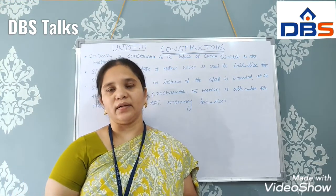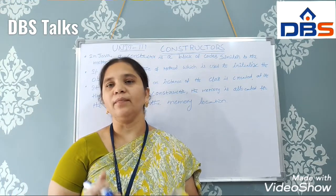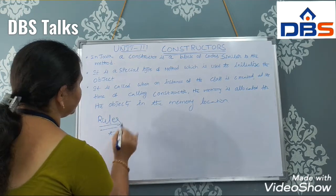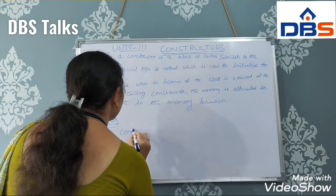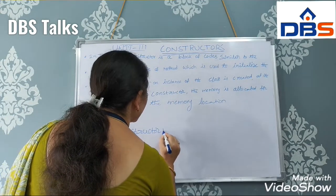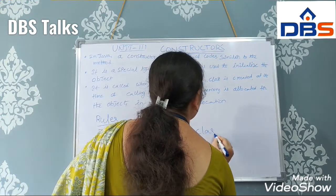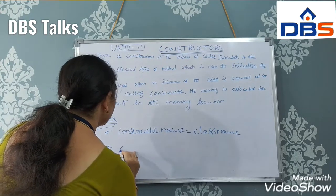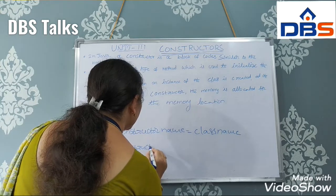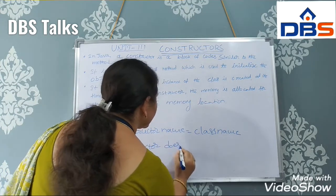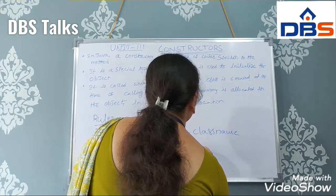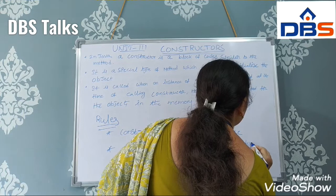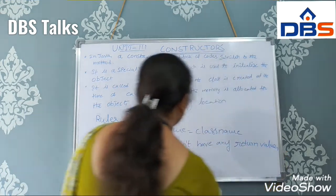When we want to create constructors, we need to follow some rules. The first rule: constructor name must be equal to the class name. The second rule: a constructor does not have any return value or return type.